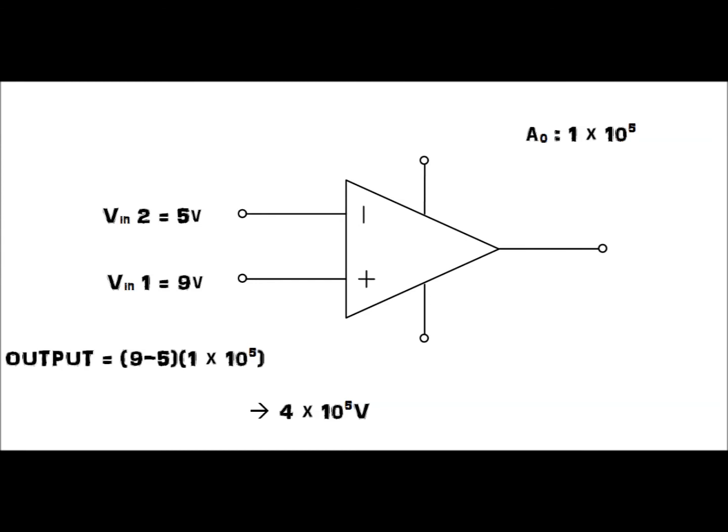As demonstrated, the emerging voltage is simply the voltage difference multiplied by the gain, producing an output voltage of 400,000 volts. As you have probably noticed, this is extremely large, hence the majority of the op-amp configurations do not employ open-loop design.